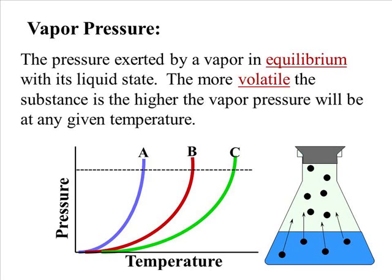Vapor pressure is the pressure exerted by a vapor in equilibrium with its liquid state. The more volatile the substance is, the higher the vapor pressure. Volatile means weaker intermolecular forces.